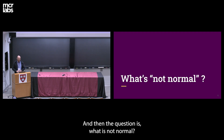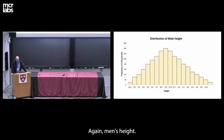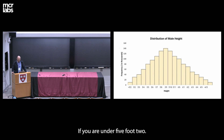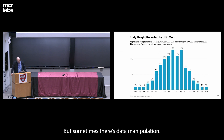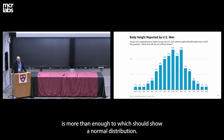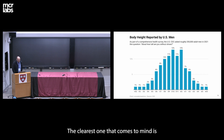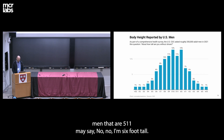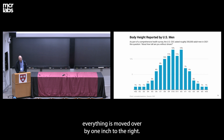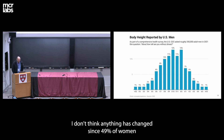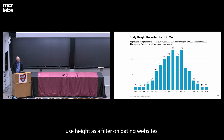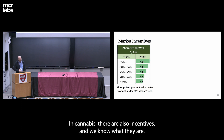The question is, what is not normal? The average male in the U.S. is 5'9". Few are over 6'5" and few are under 5'2". But sometimes there's data manipulation, as seen in self-reported men's heights. The data set is large enough that it should show a normal distribution, but we see two things: men who are 5'11" may say they're 6' tall, and everything is shifted one inch to the right. In cannabis, 49% of women use height as a filter on dating websites, so we know men have an incentive to exaggerate. In cannabis, there are also incentives — the association of THC amount to price.